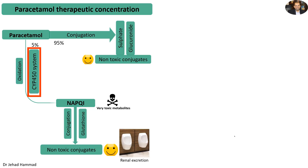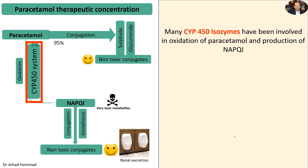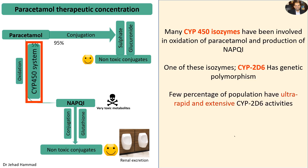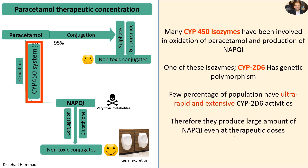Many CYP450 isozymes have been involved in the oxidation of paracetamol and production of NAPQI. It has been discovered that one of these isozymes, specifically CYP2D6, has genetic polymorphism. As a result, a small percentage of the population have ultra-rapid and extensive CYP2D6 activity. Therefore, these individuals produce large amounts of NAPQI even at therapeutic doses of paracetamol.